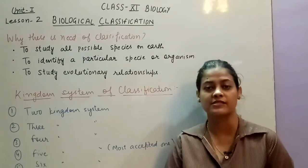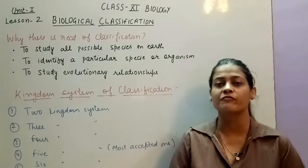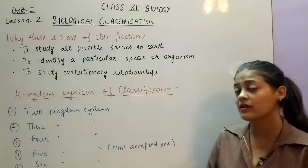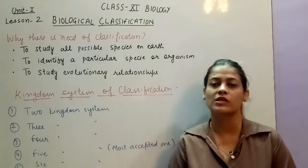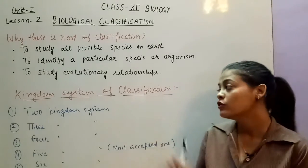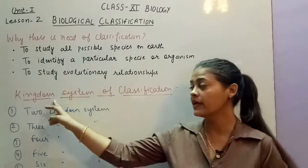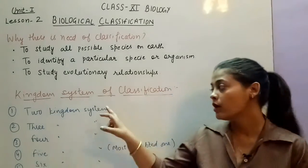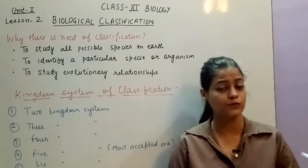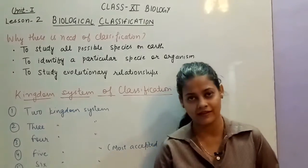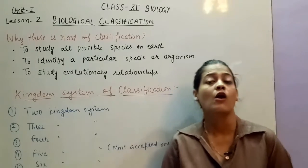Next is the kingdom system of classification. Kingdom system of classification means: when we classify organisms we make groups. There are millions of organisms, so how many groups can we make? We can make thousands of groups. So what we do is look at the highest level of hierarchy, which is the kingdom. Scientists fixed particular kingdoms in which we have further categories, groups and subgroups. The kingdom is the highest level we study.